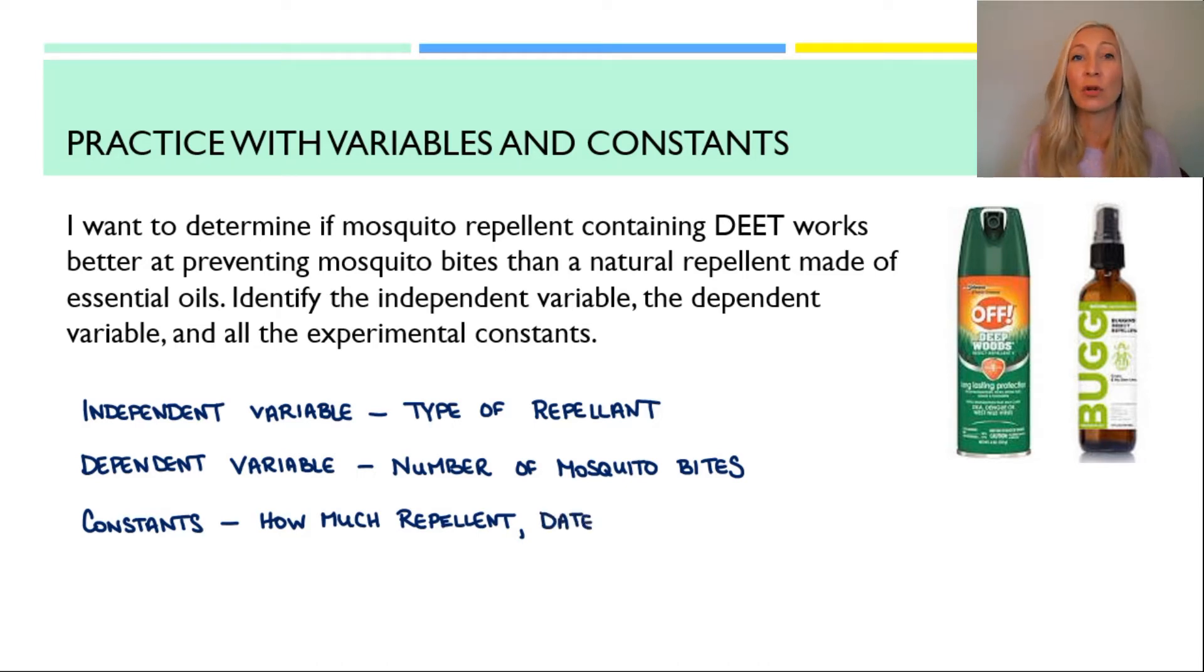The second thing that we want to control is the date and time of the experiment. During the day, there may not be as many mosquitoes. And at night or in the evening, there may be more mosquitoes. So I couldn't test one repellent during the day and one repellent at night. Otherwise, my experiment would not be valid. So you want to try to keep the date and time the same. Another thing that you probably would want to keep the same is the location of the experiment. If you're next to a body of water, there may be more mosquitoes than if you're away from a body of water or even in your house where there may be no mosquitoes. So you want to keep the location the same for both of these different mosquito repellents.